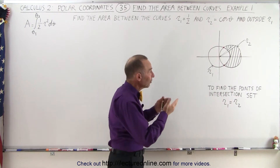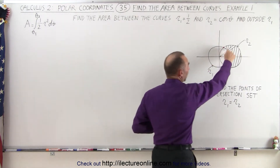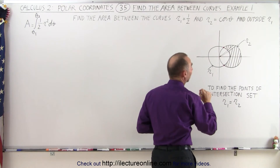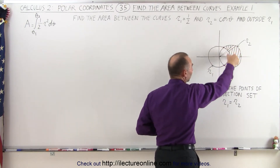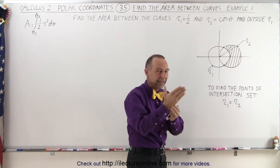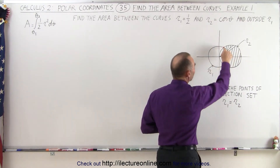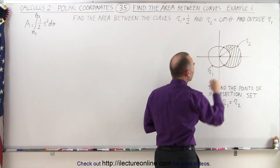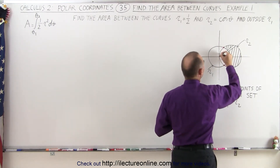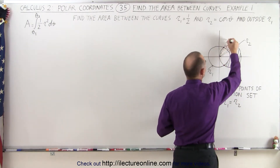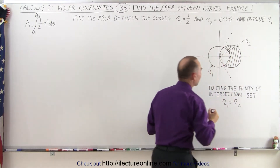What we need to do is set up a small area element, which is going to be a triangular piece, and we're going to integrate that over the distance. In this case we want to integrate between two angles — two angles defined by where these two functions meet. The angle at the top can be found by drawing a line here and the angle at the bottom by drawing an angle like this.